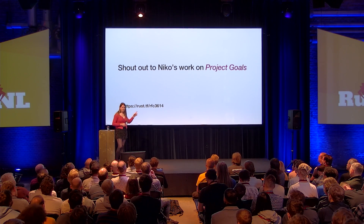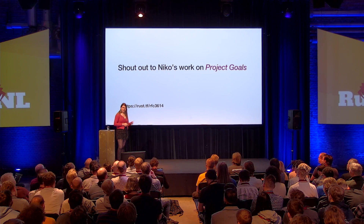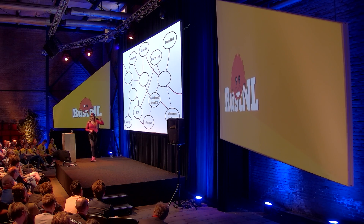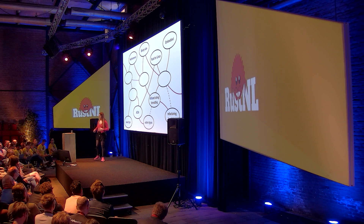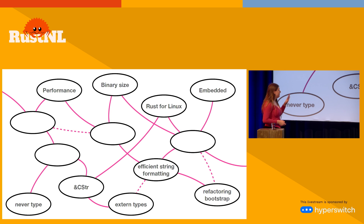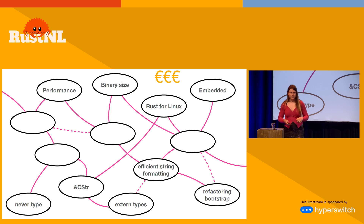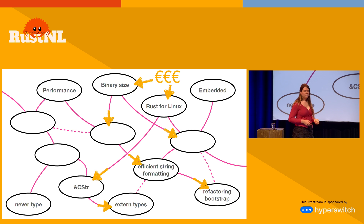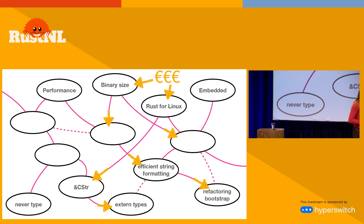Check out the RFC — I think earlier today or maybe yesterday there was a blog post on the Inside Rust blog, go check it out. This map is also very useful for funding. Imagine the Rust Foundation gets a grant from some big company — 'here's two million euros, go spend it on binary size or Rust for Linux' — they tend to get funding for high-level problems, not low-level ones. You can follow these arrows down and see what the money should actually be spent on. Because today, if you're working on refactoring bootstrapping and try to get money for that, you'll just get a no. But with this map you can show them: if you want that, you need this.